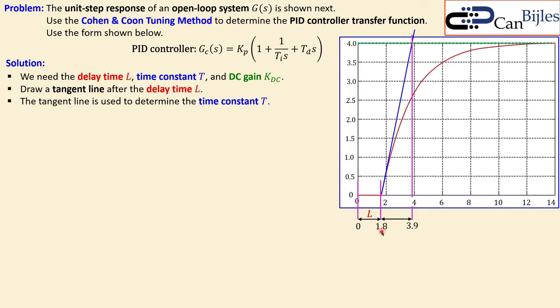Now we can set up the transfer function for the PID controller with Kp, Ti, and Td substituted. We can rewrite this to more easily identify the poles and zeros. After a few algebraic steps, you get a form with two zeros and one pole at the origin. The two zeros of the PID controller are at minus 1.388 and minus 0.3779, and there is a pole at the origin along with a constant gain.